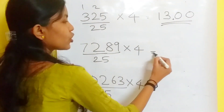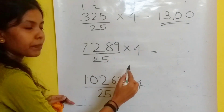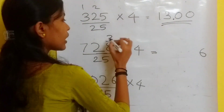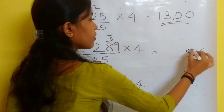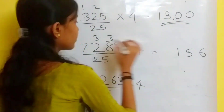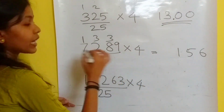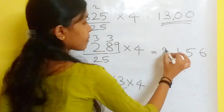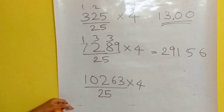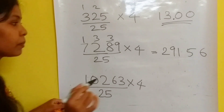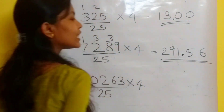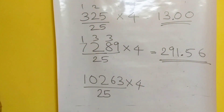Now let's move to the second problem. Just multiply by 4: 9 into 4 is 36, 8 into 4 is 32 plus 3 is 35, 2 fours are 8 plus 3 is 11, 7 fours are 28 plus 1 is 29. There should be two digits after the decimal point, so the answer is 291.56.